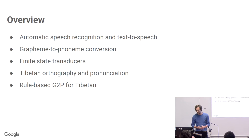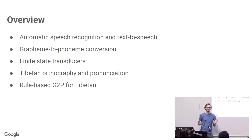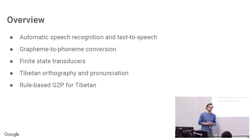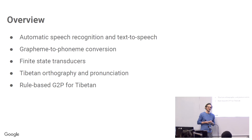I'll give a brief overview of how automatic speech recognition, or ASR, and text-to-speech, TTS, works. Then I'll talk about how Grapheme to Phoneme, or G2P, conversion works. Then I'll talk about what finite state transducers, or FSTs, are, and then I'm going to talk in more depth about Tibetan and why it's a super interesting case and a real challenge for us to work on Tibetan G2P.